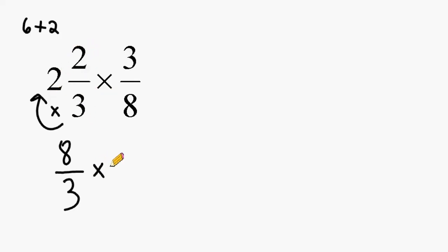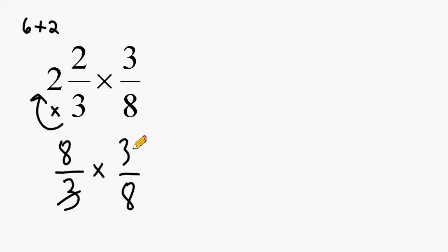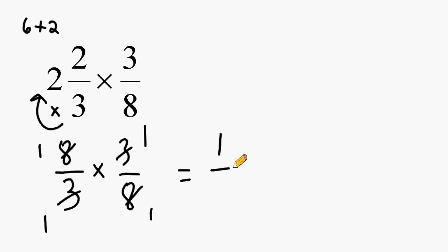Next we multiply 8/3 by 3/8. After renaming any mixed number as an improper fraction, you may apply cancellation. We have 3 on the bottom and 3 on the top — change both to 1. We also have 8 on the top and 8 on the bottom — cross both out and turn them to 1. With 1s on top and 1s on the bottom, the product is 1 over 1, which equals 1.